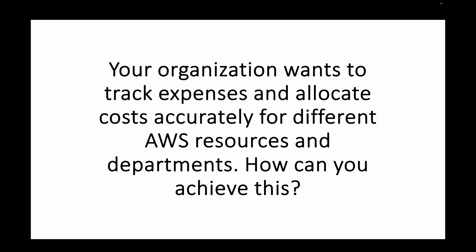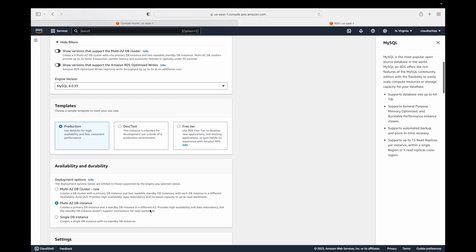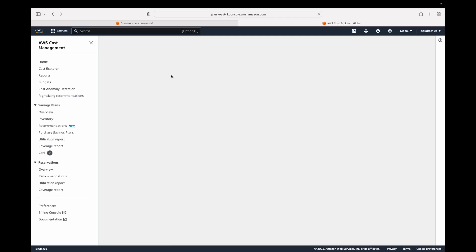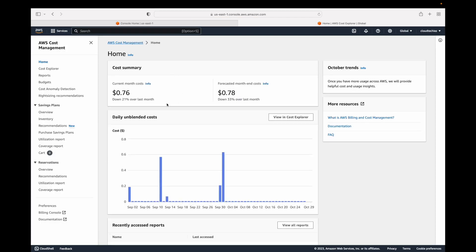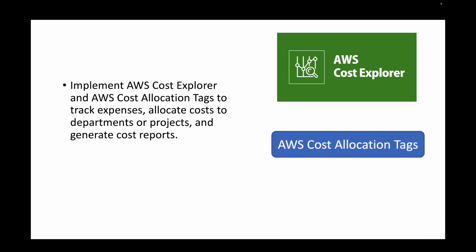The next question is: your organization wants to track expenses and allocate costs accurately for different AWS resources and departments. How can you achieve this? For this, we can implement AWS Cost Explorer. This service gives us information on how much cost we have used — for example, how long EC2 instances ran and what the costs are. We can also use cost allocation tags to keep track of expenses and allocate costs for different departments or projects.